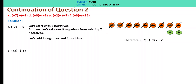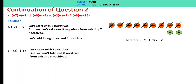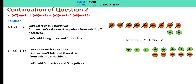D: plus 3 minus of plus 8. Let's start with 3 positives. We can't take out 8 positives from existing 3 positives. So we add 5 positives and 5 negatives. We strike off 8 positives and are left with 5 negative tokens. Therefore, plus 3 minus of plus 8 is minus 5.